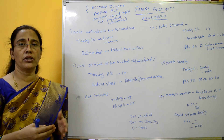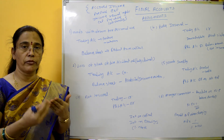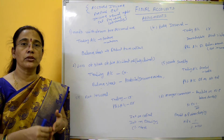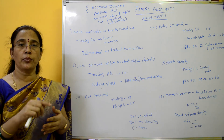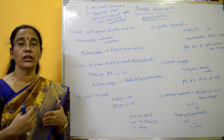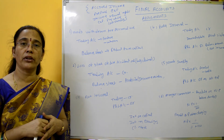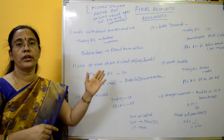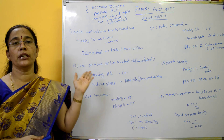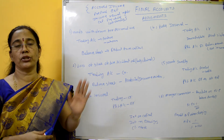Next is discount on creditors. Creditors who give us a discount — that is income. For example, if we have 10,000 of creditors and a 10% discount, we calculate 10,000 multiplied by 10 divided by 100. This discount on creditors is treated as income, credited in the profit and loss account, and the creditors balance is reduced accordingly.